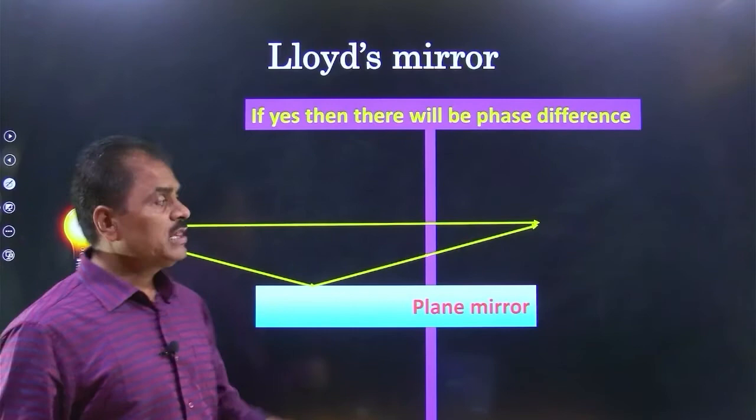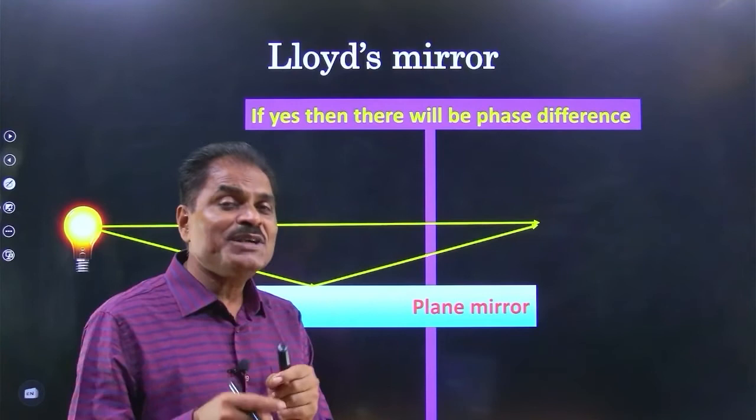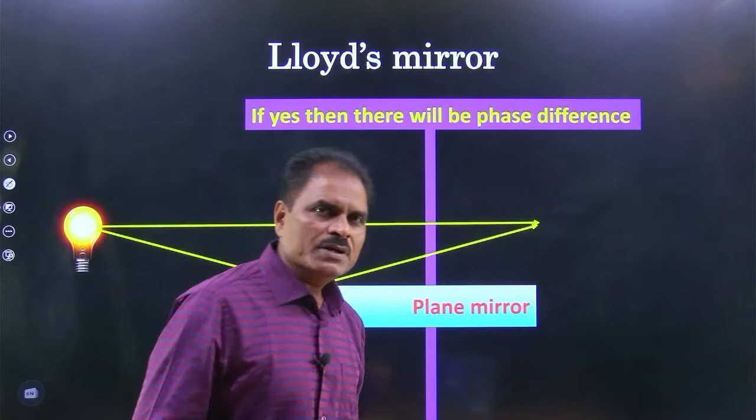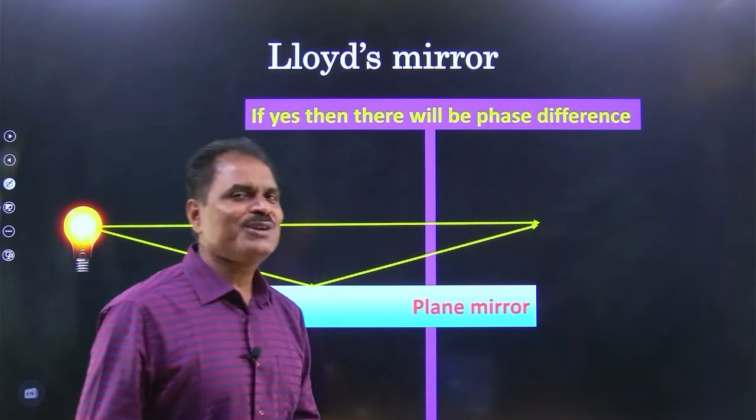है मतलब यहाँ phase difference होगा. If that phase difference is integral multiple of 2π, the pattern will be constructive. अब यह destructive भी हो सकता क्योंकि phase difference odd multiple of π होगा तो pattern destructive हो जाएगा.